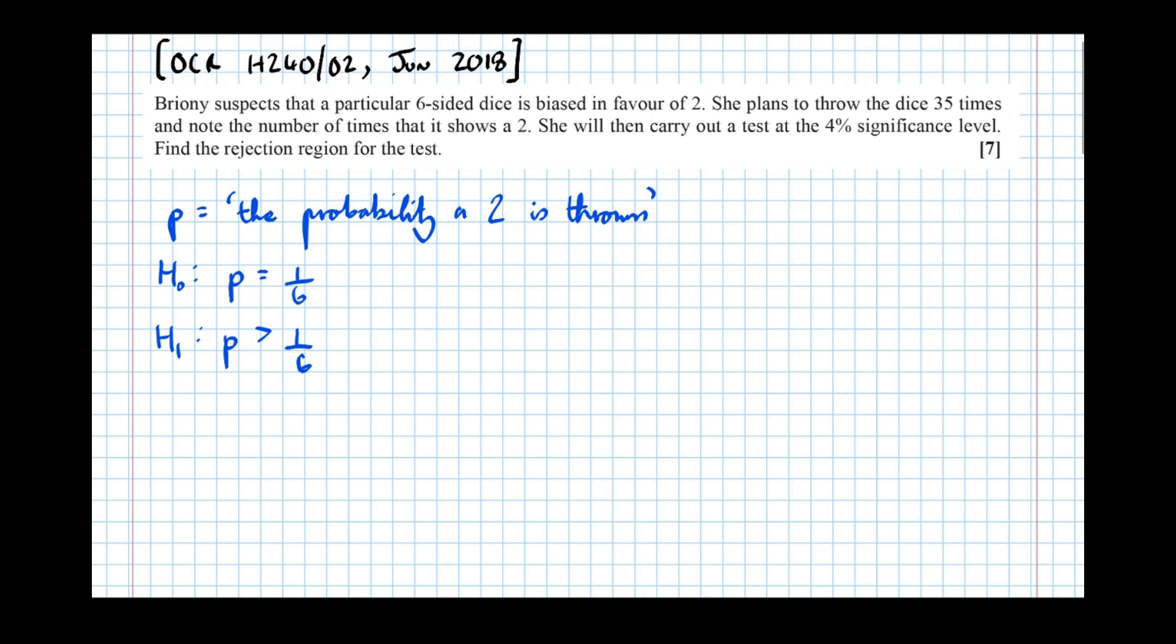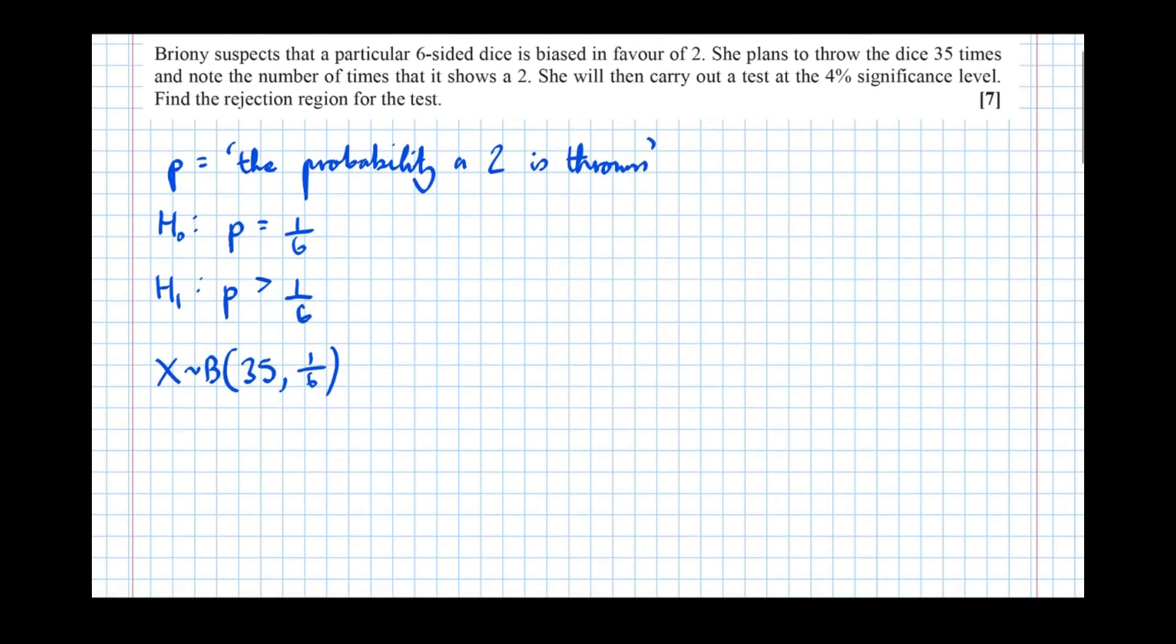And finding the critical region here is going to be slightly more difficult given that it's a greater-than test. So she plans to throw the dice 35 times and note the number of times that it shows a two. So the distribution we're going to use is binomial distribution 35, and the probability we're testing is a sixth.